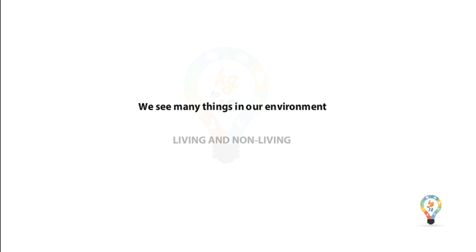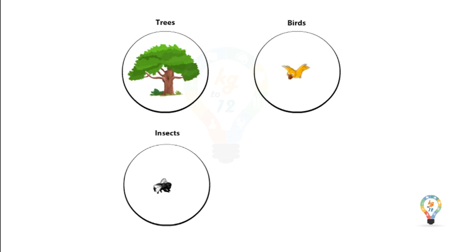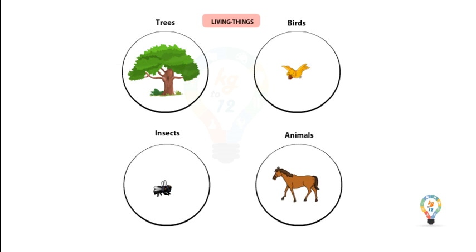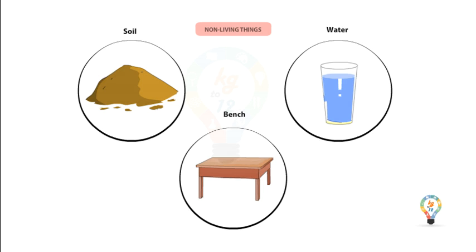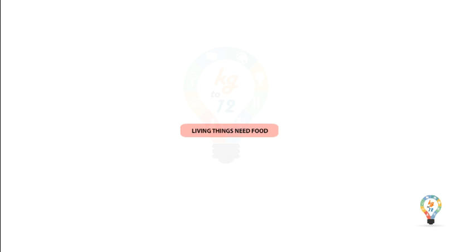We see many things in our environment — living and non-living. Trees, birds, insects, and animals are all living things. Soil, bench, and water are non-living things. Living things are different from non-living things as they have some special characteristics which non-living things don't have. Let's know about the characteristics of living things.